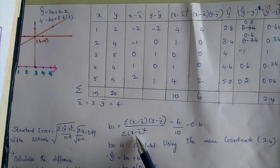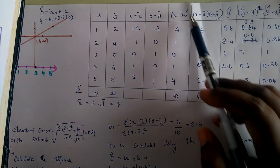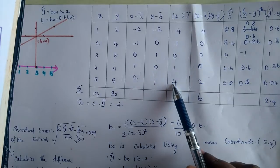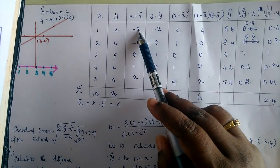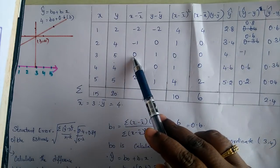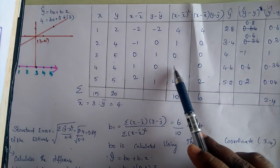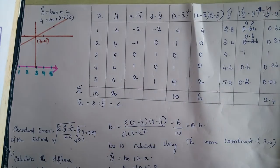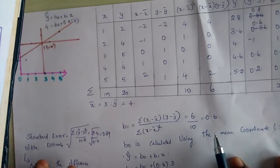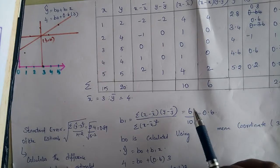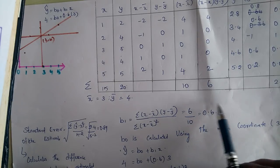For the denominator, we find (x minus x-bar) squared and sum them: (−2)²=4, (−1)²=1, 0²=0, 1²=1, 2²=4, giving a sum of 10. So the slope b1 equals 6 divided by 10, which is 0.6.